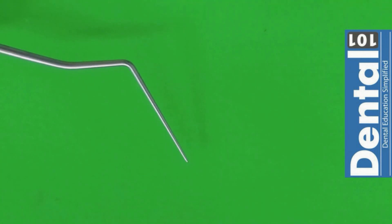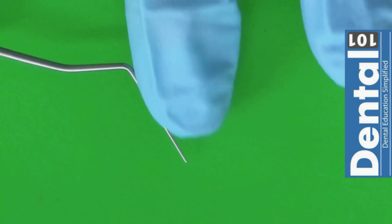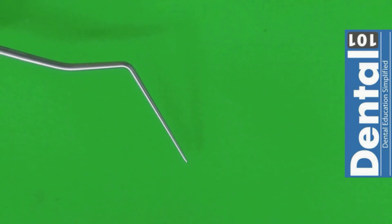This instrument is the endoprobe. It has two working ends. Both of them are pretty much the same. It is undulated like you can see here because it is going to help you localize the canals when you are doing an endo access or an endo opening. And also it is going to help you check the straight line access into the canals when you are doing the endo access task.